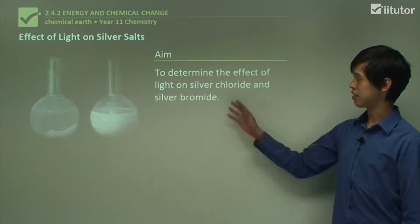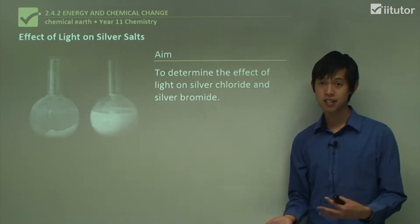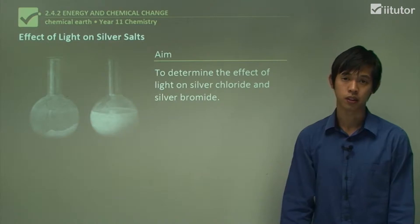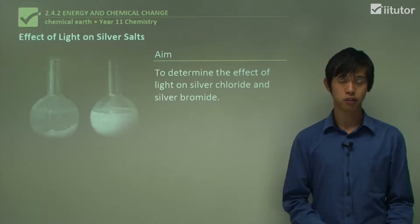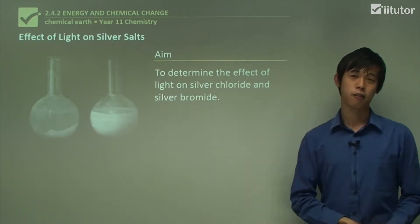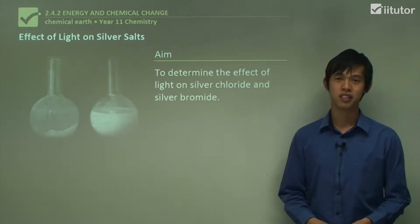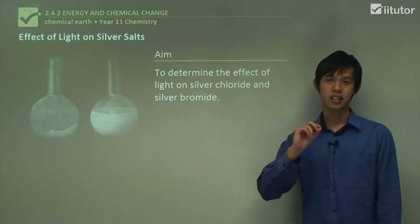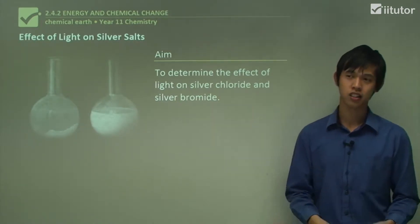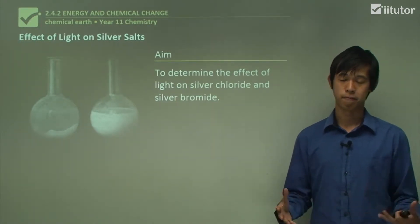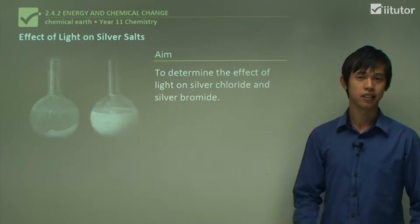Our aim is to determine the effect of light on silver chloride and silver bromide — we want to know what the effect of light is on these two substances. These two substances were very popular before digital cameras were invented because we used them in photographic film. Film had silver ingrained in it, and when struck by light it would change, giving you a photograph of what was going on.